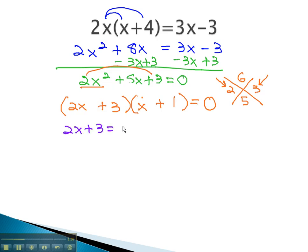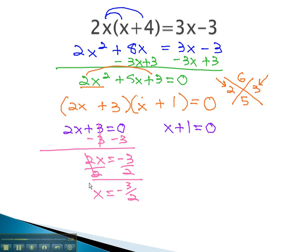2x plus 3 equals zero, and x plus 1 equals zero. Those equations quickly solve by subtracting 3 to get 2x equals negative 3, and dividing by 2 to get x equals negative 3 halves. The second equation we solve by subtracting 1 to get x equals negative 1. Simplifying first allowed us to make the equation equal zero, so we could factor and set each factor equal to zero.